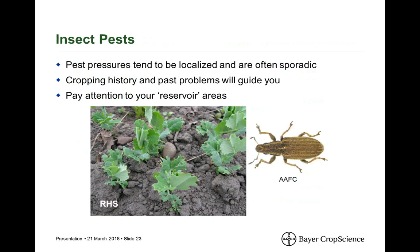A brief note on insect pests: pest pressures tend to be more localized and often sporadic, not necessarily consistent. You may be at risk for a pest issue the year after you've already had one, but that doesn't guarantee it. The most important thing is to know your cropping history and track past problems. Also pay attention to reservoir areas — shelter belts, ditches — and whether the weeds, grasses, or wildflowers in those areas are hosts for insects that could infect your pulses. There's a photo here of pea leaf weevil damage.